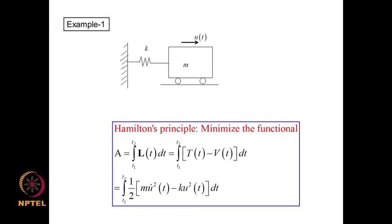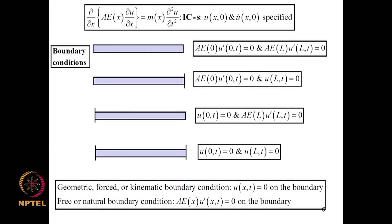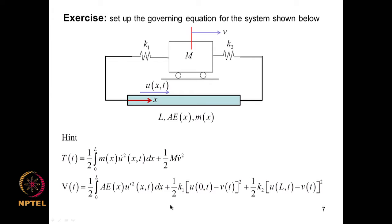We began by considering application of Hamilton's principle to simple systems like mass-spring-dashpot systems and derived the equation of motion, then generalized this to continuous systems such as a vibrating rod. Application of Hamilton's principle enables us to derive the equilibrium equation and also a set of valid boundary conditions. The boundary conditions were classified as geometric, forced or kinematic conditions, and natural boundary conditions. We covered several examples combining continuum elements and discrete elements using Hamilton's principle.